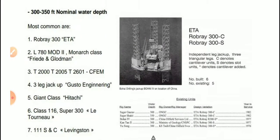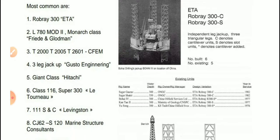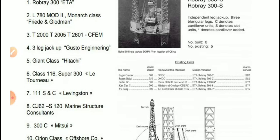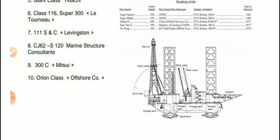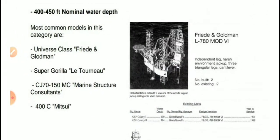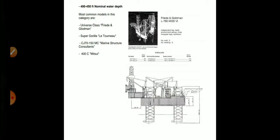For 300 to 350 feet water depth, common models include Rowan Gorilla 300, ETA L780 Model 2, and Monarch class. For 400 to 450 feet nominal water depth, common models in this category are Universe class, Freddy, and Goldman. These are the types of jackup rigs. I hope you understood the information.